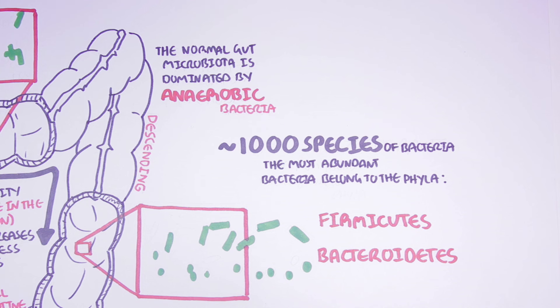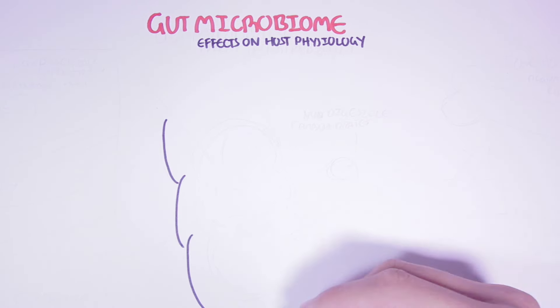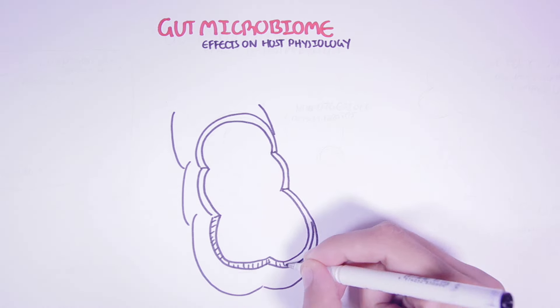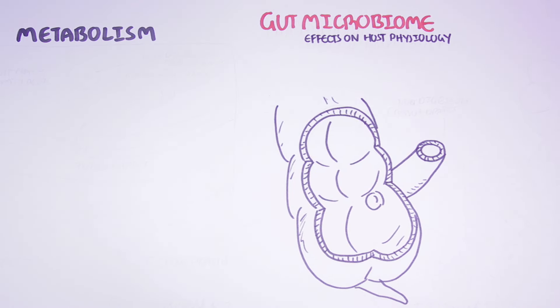Our gut microbiota plays many fundamental roles in our body. The main impact gut microbes have on host physiology is on metabolism. The gut microbiota has been shown to help absorb nutrients, but the main effect on metabolism is that the gut microbiota has a big role in fermentation.